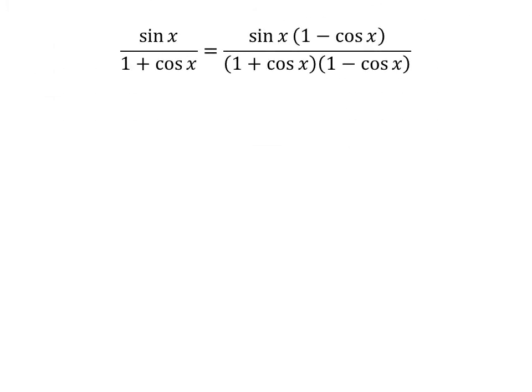As multiplying the numerator and the denominator of a fraction by a common factor does not change the value of the fraction, so let us multiply sine of x upon 1 plus cosine of x by the common factor 1 minus cosine of x.